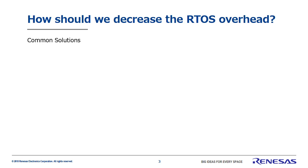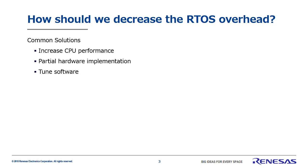So what can we do to solve these issues? The most common solutions are increasing CPU performance, moving some functions to hardware, and fine-tuning the software. However, increasing CPU performance leads to increased cost and power consumption.